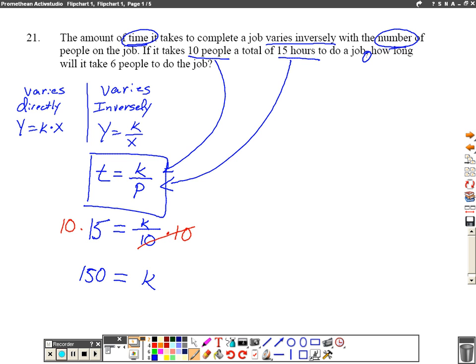After that comma, we have almost like a totally separate problem where we're going to take our equation again. T equals k over p. And we're going to use our new value for k, which is one fifty.